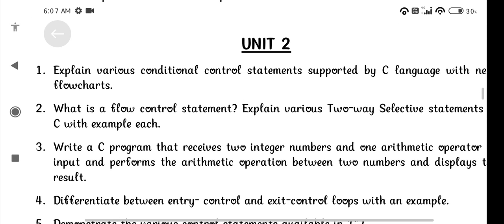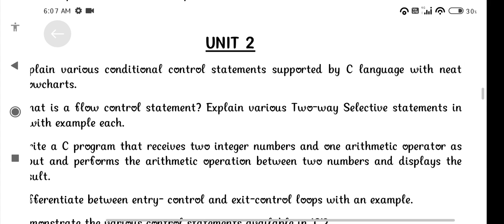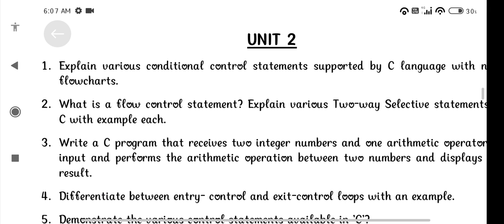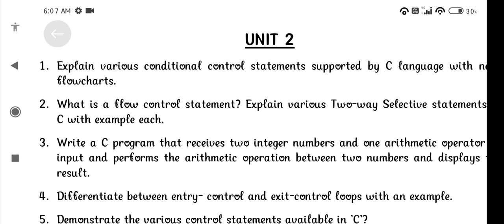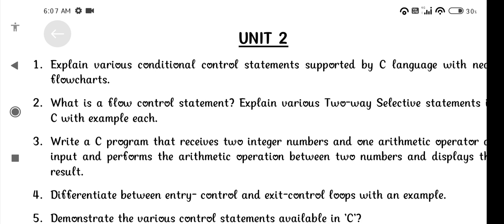Question number 1. Explain various conditional control statements supported by C language with neat flowcharts. Question number 2. What is a flow control statement? Explain various two-way selective statements in C with example each.